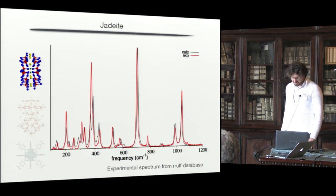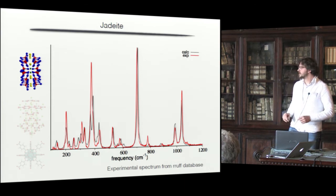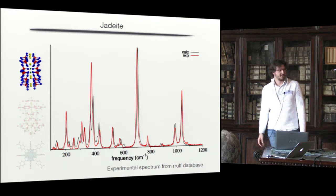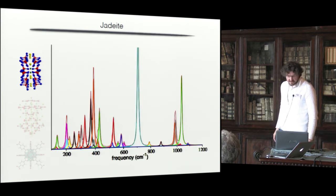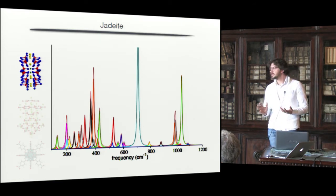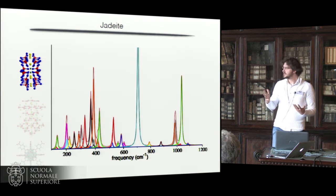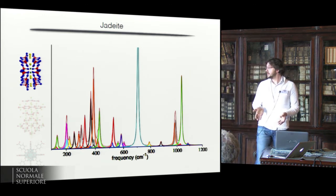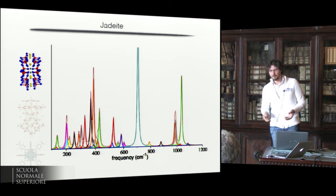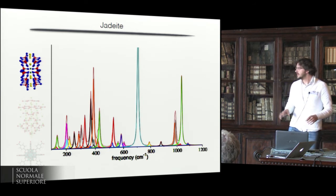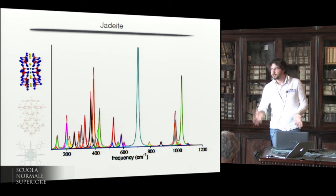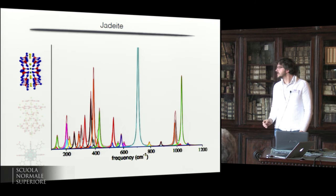This is a powder spectrum — not directional — of a jadeite. Again, we can catch all the important features of this spectrum remarkably well. Most importantly, we have a total deconvolution of this spectrum, so we can see how it is built. Even very small peaks — some that are supposed to be Raman active are very small. Experimentalists using group theory know how many peaks should be seen and try to assign all of them. Here we clearly see that some peaks cannot be assigned on the basis of the experiment alone, and we can tell experimentalists that these will never be seen.